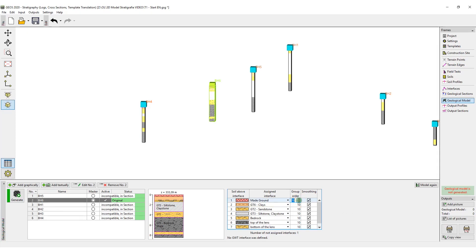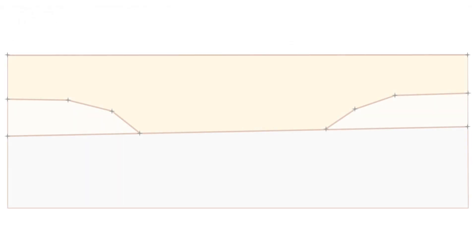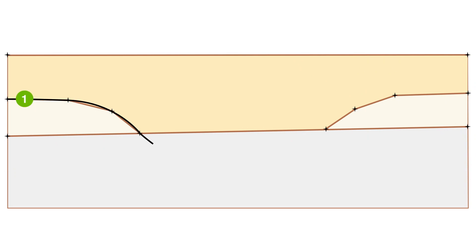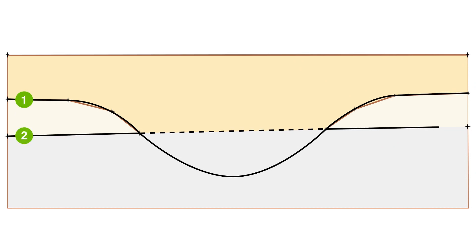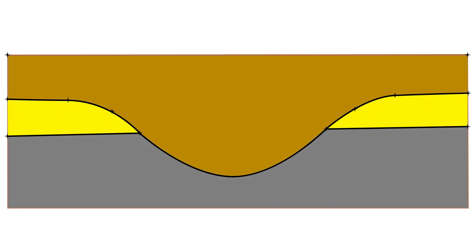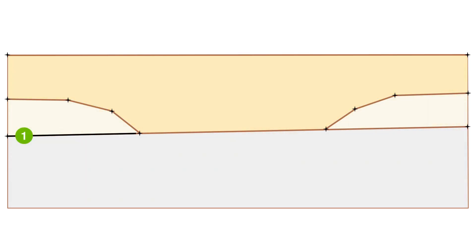We also need to change the order of generation for some continuous interfaces. If the order wasn't changed, the layers would be generated from top to bottom. By changing the order, we make sure the model gets generated correctly.